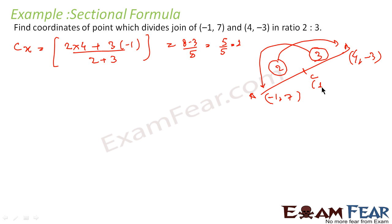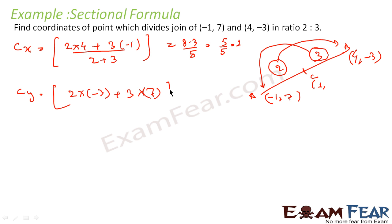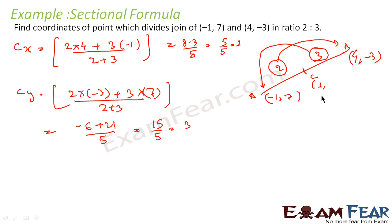So this point has x = 1. Now find y as well. For y, same approach: take 2 and multiply with the y-component -3, plus take 3 and multiply with the y-component 7, divided by 2 plus 3. This becomes (-6 + 21) / 5, that is 15/5 = 3. So this becomes (1, 3) and that is my answer — C is equal to (1, 3).